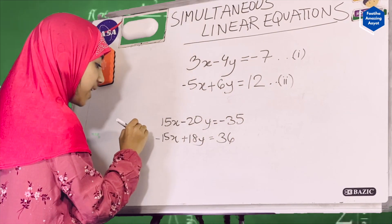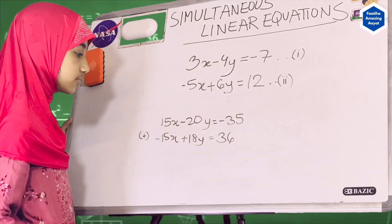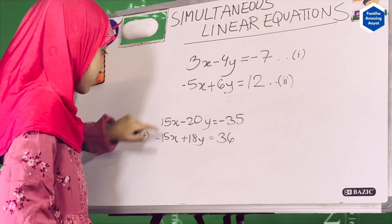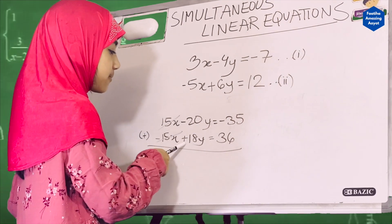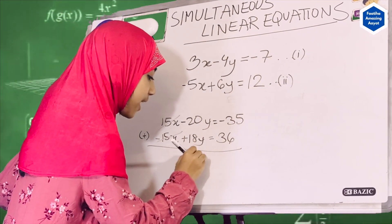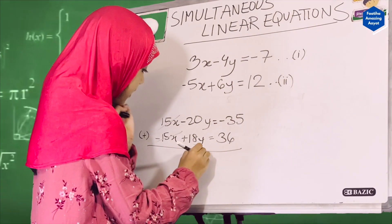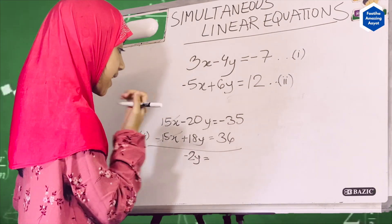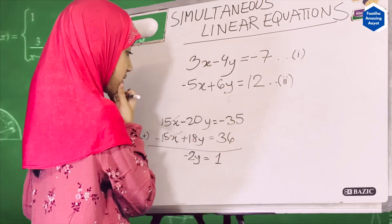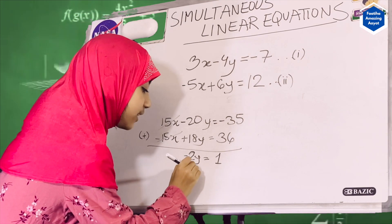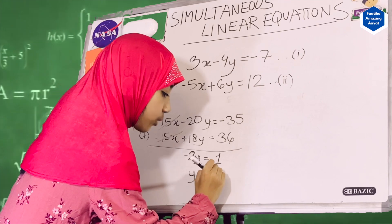If we add both equations, the x terms cancel out. Adding the y terms: minus 20y and plus 18y — minus and plus is minus, greater number is minus — gives minus 2y. Adding the constants: minus 35 and plus 36 — minus and plus, greater sign is plus — gives 1. So minus 2y equals 1, and dividing both sides by minus 2 gives y equals minus 1 over 2, the same as in the substitution method.